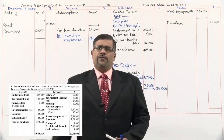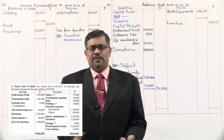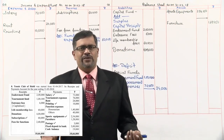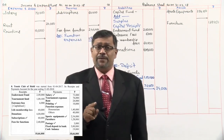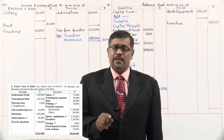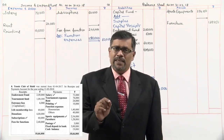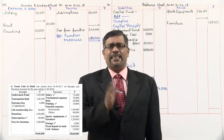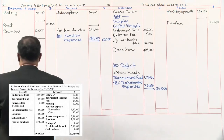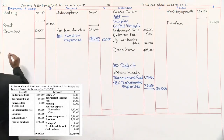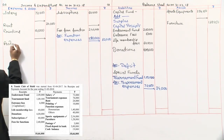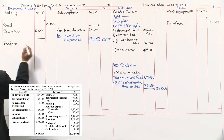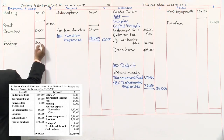After furniture, postage — a revenue expense, but it has a tick mark, so we take it in the inner column. Amount is 3,000.